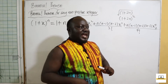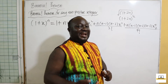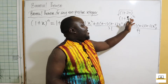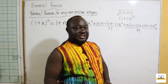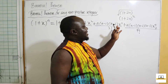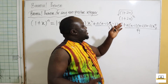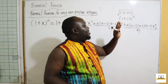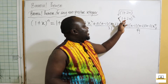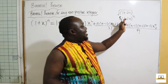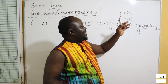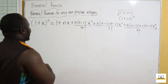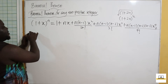When the power is one half, I can't determine the number of terms — they run towards infinity. So the question will typically ask you to expand the first four terms of the expansion.